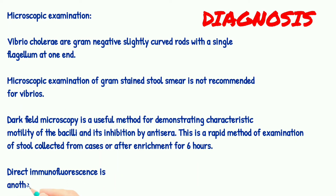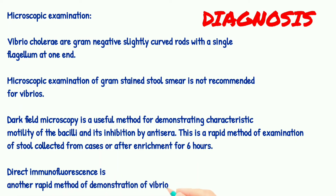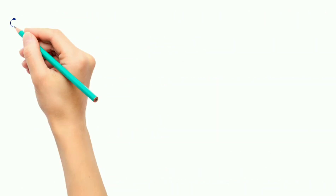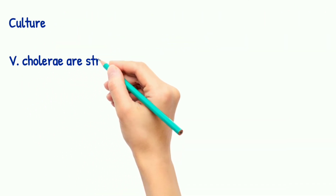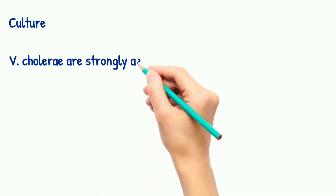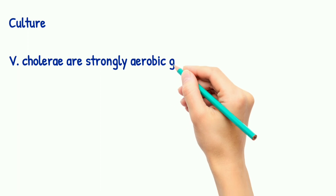Stool collection from cases after attachment for six hours — direct immunofluorescence is another method for rapid detection. For culture, Vibrio cholerae are strongly aerobic, growing scantily or slowly in anaerobic conditions.